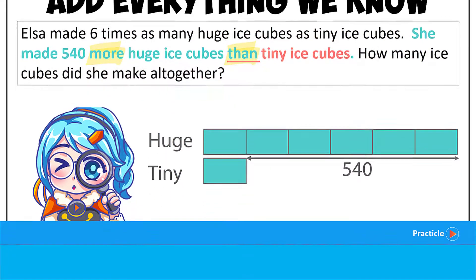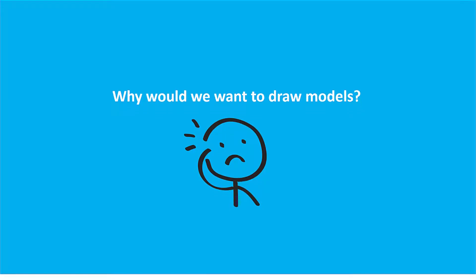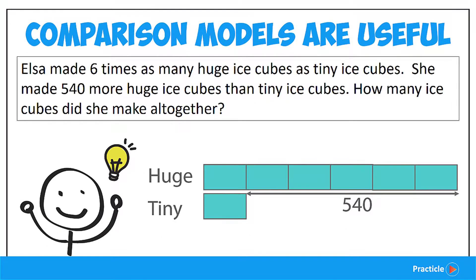Now let's see why we need to draw the comparison models and why they are so helpful. When we look at any comparison model, we should be able to tell quite a number of things — four things to be exact. Can you guess what these four pieces of information are?